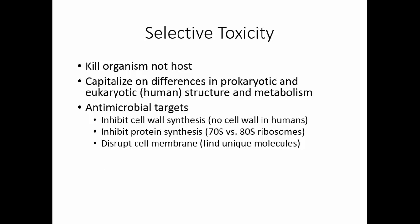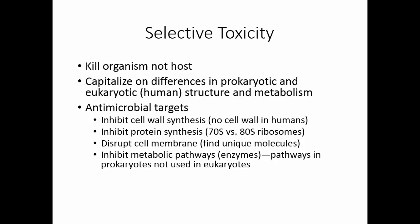There are a few unique molecules in the two cell types, but not very many. Inhibiting metabolic pathways or the enzymes of metabolic pathways is another route we can use. Prokaryotic cells have some metabolic pathways that are not used in eukaryotic cells.